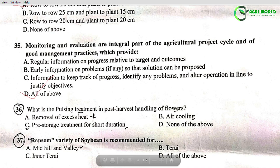Question 36: What is the pulsing treatment in post-harvest handling of flowers? Option A: removal of excess heat; Option B: air cooling; Option C: pre-storage treatment for short duration; Option D: none of the above. The correct answer is Option C: pre-storage treatment for short duration.